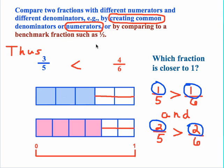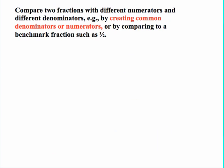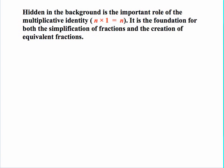Notice that we actually used another strategy here: we created common numerators — not with the original fractions themselves, but with the ones we created when comparing to 1. That's really the only reason this worked: because we had common numerators, so we could validly compare these distances from 1. Now let's look at the strategy of creating common denominators or numerators. First, we need to look at some prerequisite knowledge. Hidden in the background is the important role of the multiplicative identity — the idea that any number times 1 results in the same number. The multiplicative identity is the foundation for both the simplification of fractions and the creation of equivalent fractions.